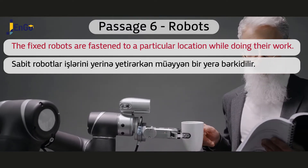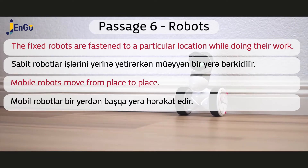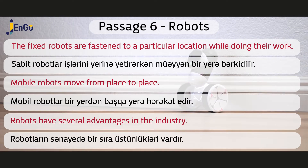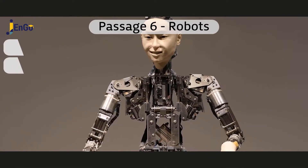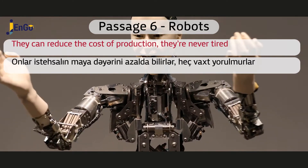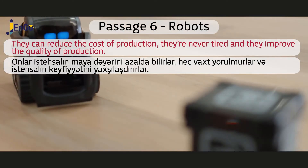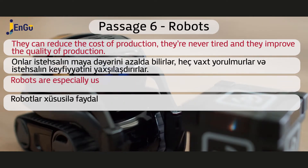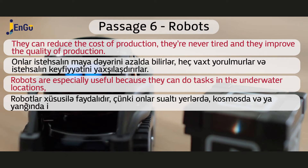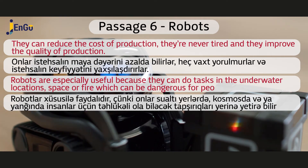Mobile robots move from place to place. Robots have several advantages in the industry: they can reduce the cost of production, they are never tired, and they improve the quality of production. Robots are especially useful because they can do tasks in underwater locations, space, or fire, which can be dangerous for people.